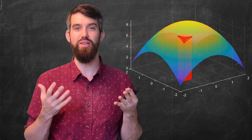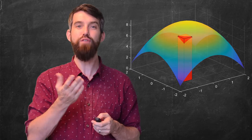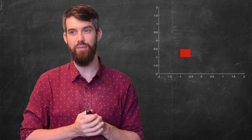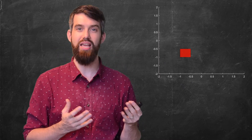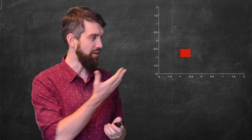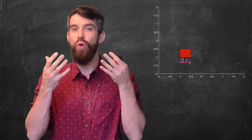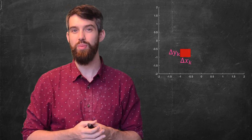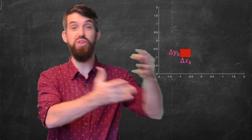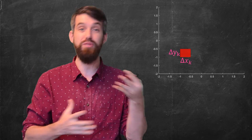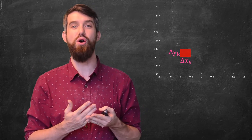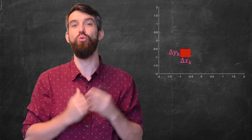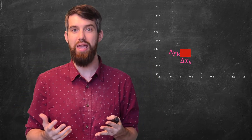Let's define this more formally. Focusing on the domain, I've specified a rectangle with width delta x and height delta y. Since there will be a large number of these little rectangles subdividing the domain, I call them delta x_k and delta y_k, referring to the kth rectangle in the partition.